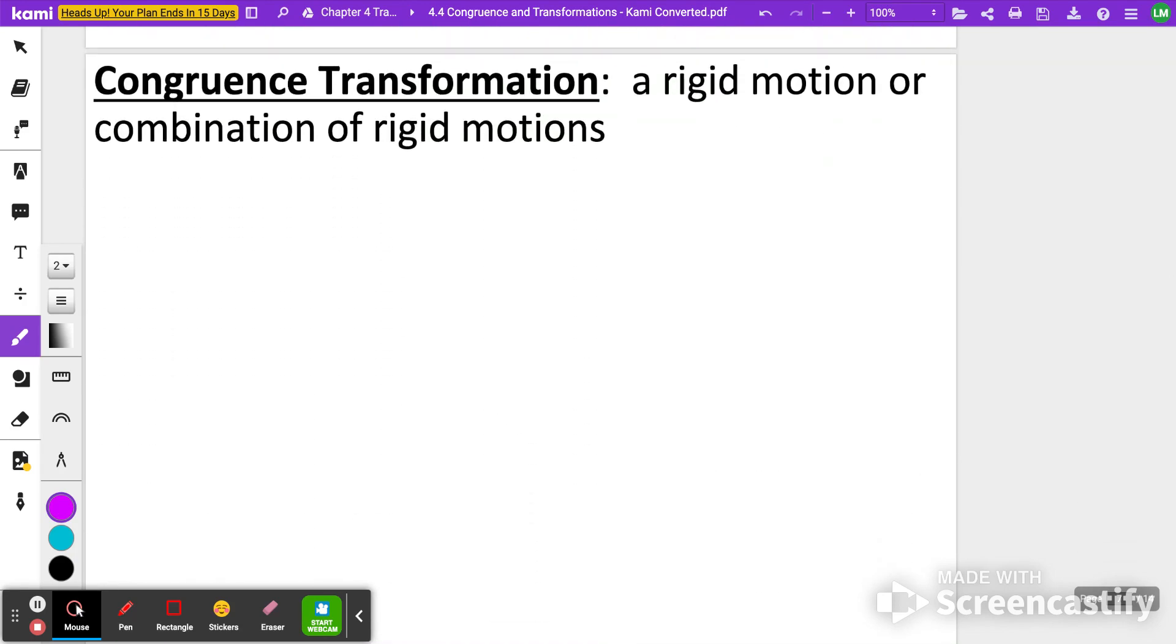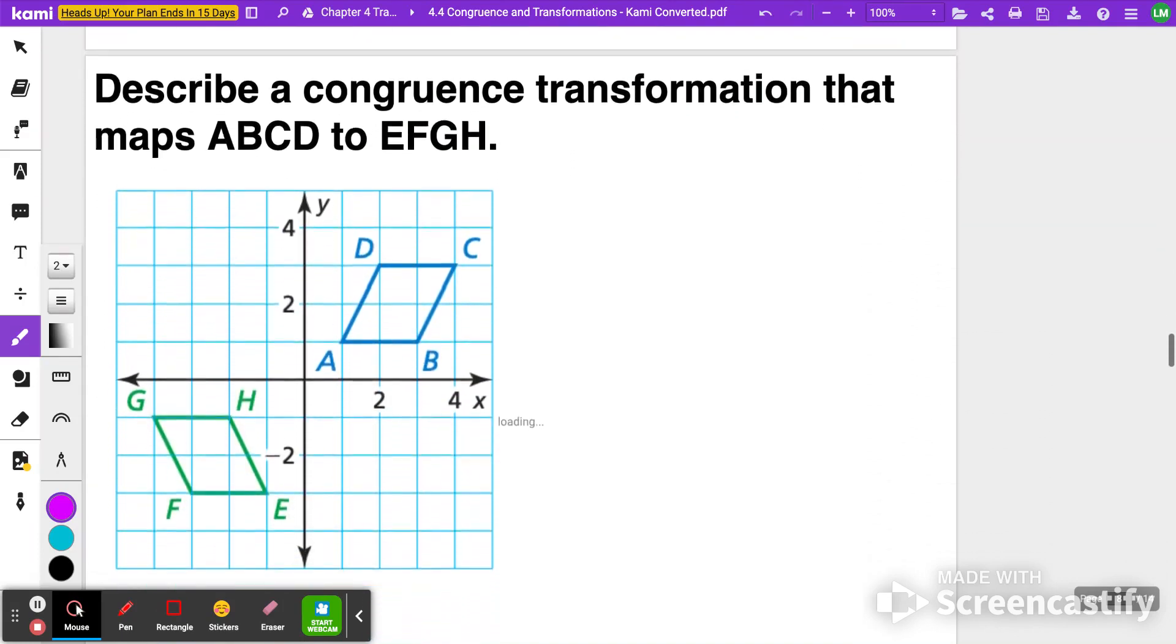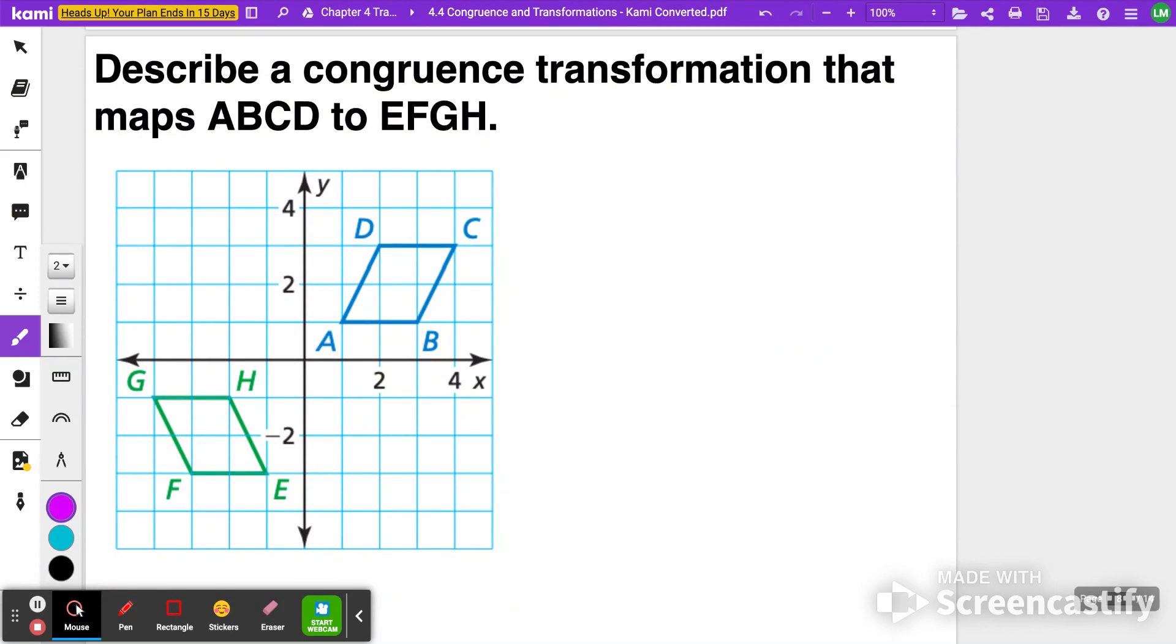Congruence transformations, that just means there are multiple transformations, and that is still going to be a combination of rigid motions. That means the size and shape are not going to change. So what we're going to do is look to see what congruence transformation could map ABCD to EFGH. So we're starting with ABCD. One thing I'm thinking of is that you can probably reflect over the y-axis and then maybe reflect over the x-axis again. So let's see what happens first when we reflect over the y-axis.